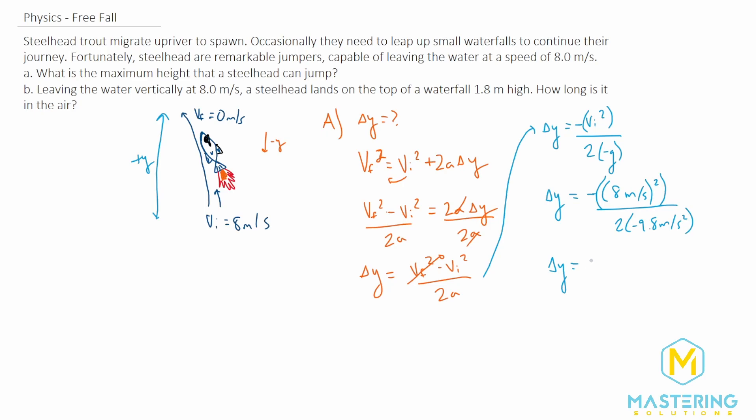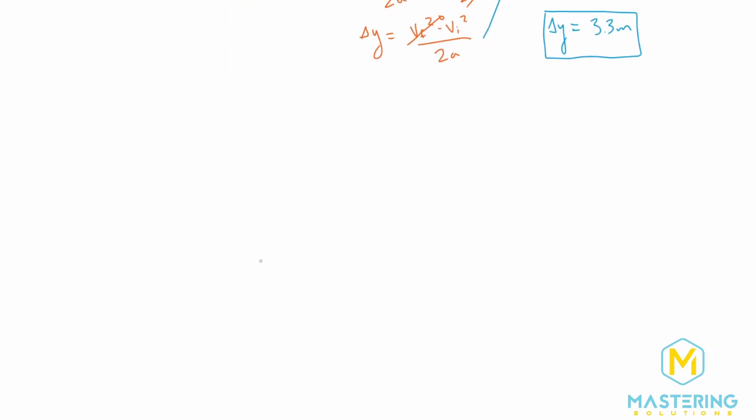We have 3.26, so we'll round that to 3.3. The delta Y in this case is the trout can jump 3.3 meters, or around roughly 10 feet, which is crazy. So here is our answer for part A. Now let's do part B, which asks how long is it in the air.